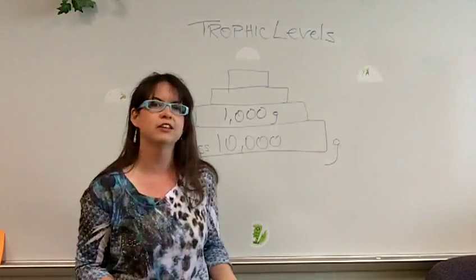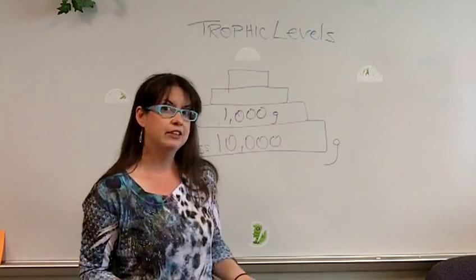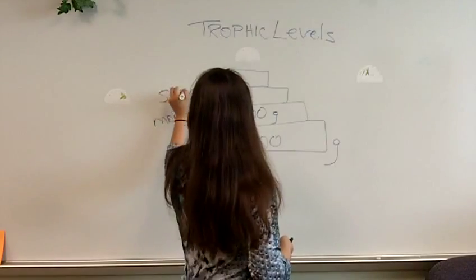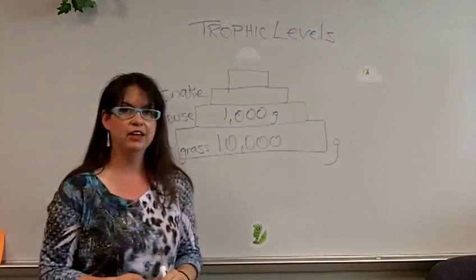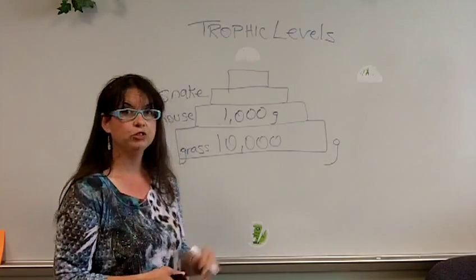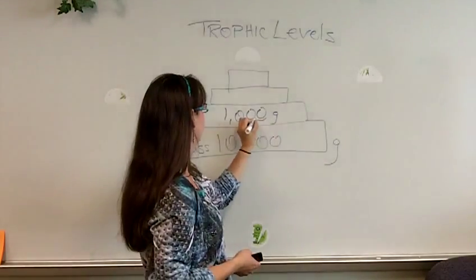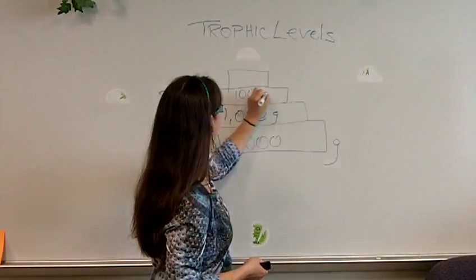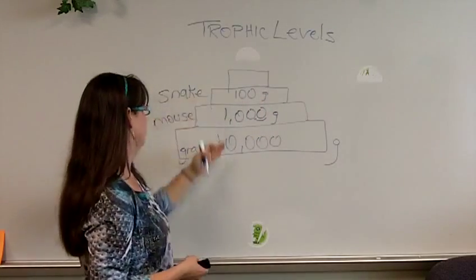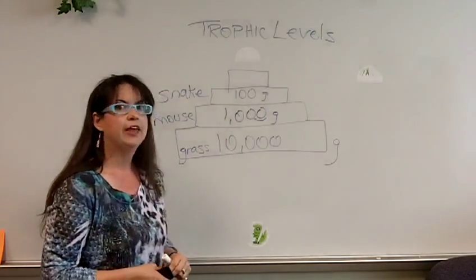And then we go up the food chain. What eats mice? Let's say a snake eats mice. So what is 10% of 1,000? It's 100. You just move the decimal place over one. It's 100 grams. So the snake would get to keep 100 grams of that 10,000 grams of biomass that it eats.